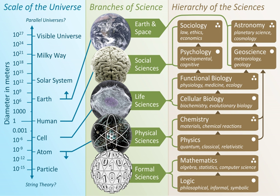Typically Earth scientists will use tools from physics, chemistry, biology, geography, chronology and mathematics to build a quantitative understanding of how the Earth system works, and how it evolved to its current state.